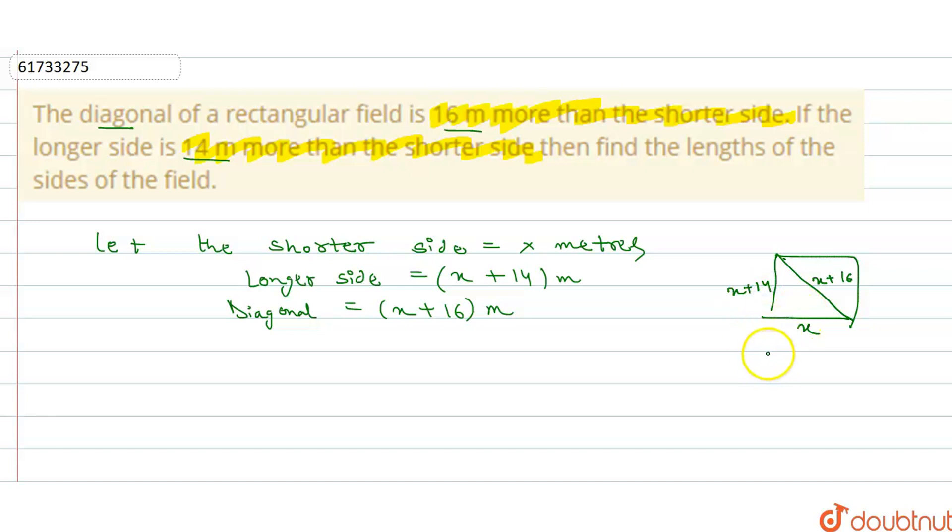So we can write the Pythagorean theorem. Hypotenuse squared is equal to perpendicular squared plus base squared, right? How much is x plus 16 squared? This is equals to x plus 14 whole square plus x square. Here comes the triangle. So we have our work. We take one side, we take each term on the same side then we can solve it.